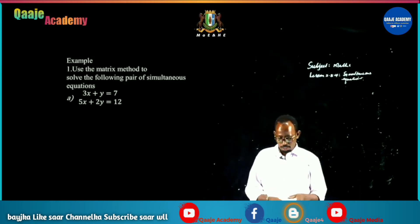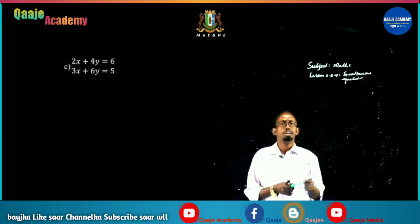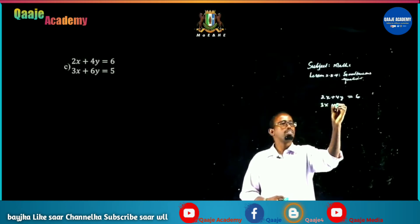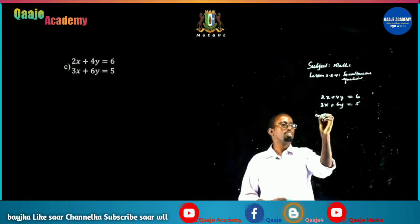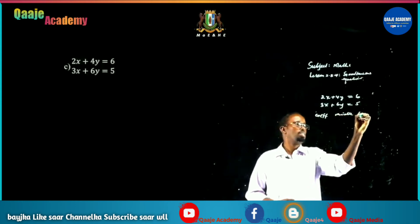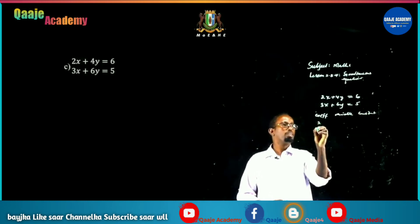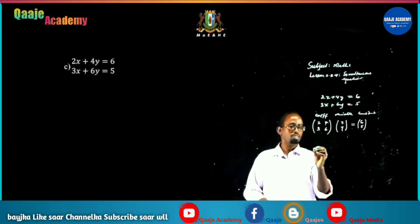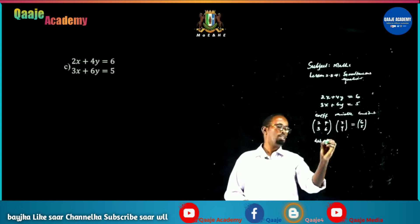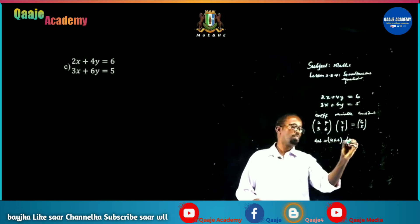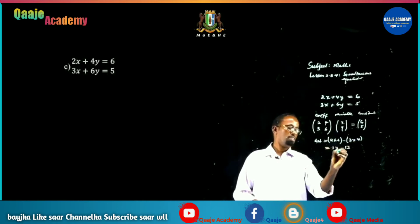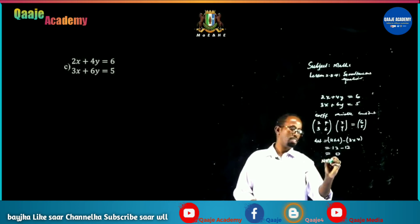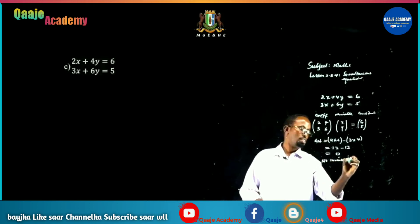The next example: 2x plus 4y equals some value, and 3x plus 6y equals 5. The coefficients [2, 4; 3, 6], variables [x; y], constants [6; 5]. The determinant equals 2 times 6 minus 3 times 4 equals 12 minus 12 equals 0. Since the determinant is 0, there is no inverse and therefore no solution.